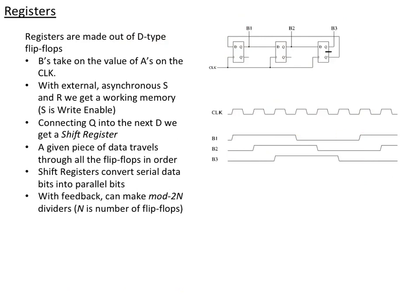If we have 3 flip-flops, we have a mod 6 or 2 times 3 counter, meaning that we divide 6 pulses in into 1 pulse. So we've divided by 6.